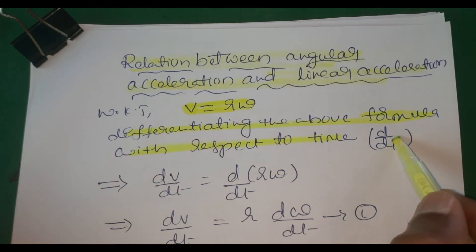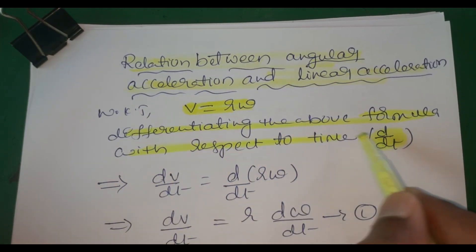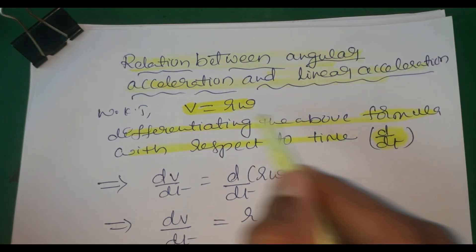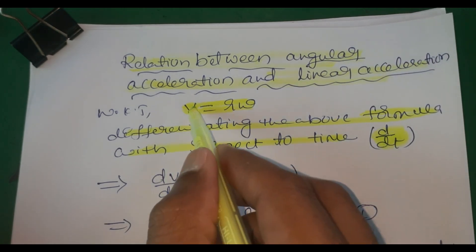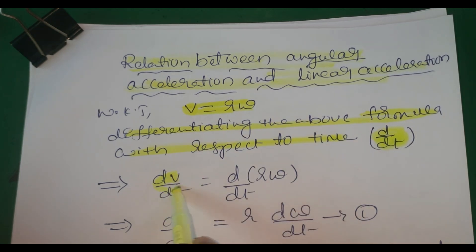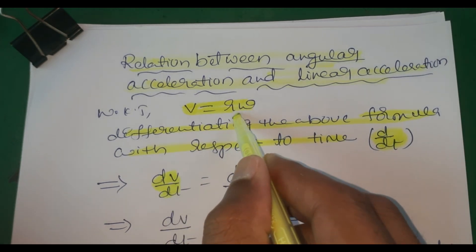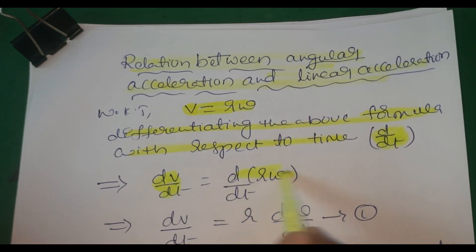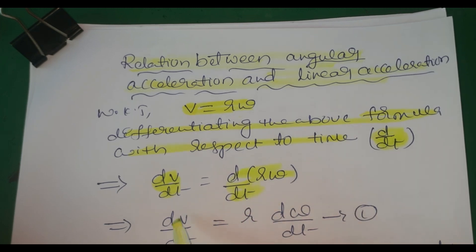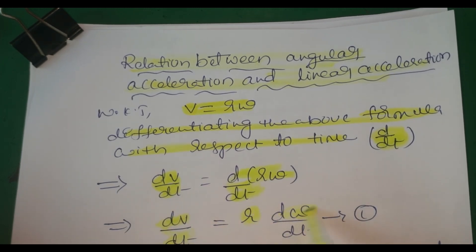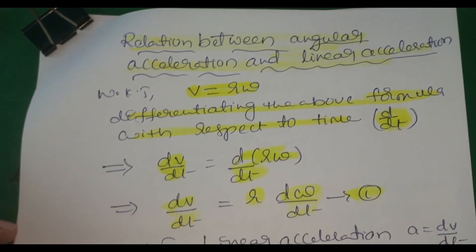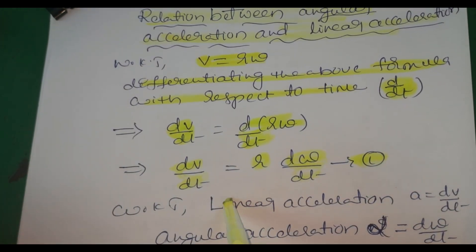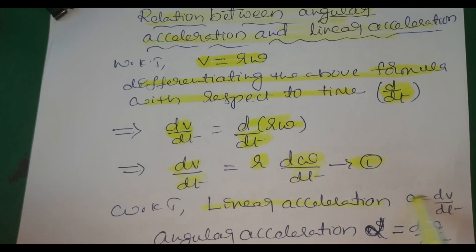Differentiating the formula v = r omega with respect to time, we apply the operator d/dt to both sides. So dv/dt equals r times d omega/dt, since r is a constant. This gives us equation one.